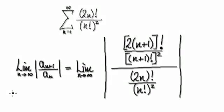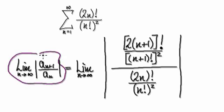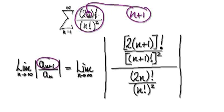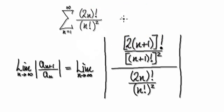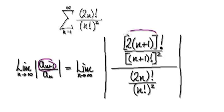To use the ratio test, we need to work out the limit of |a(n+1)/a(n)| as n tends to infinity. We need to get the next term divided by the current term. So the next term is found by putting n+1 into the expression. That gives us a 2 on the outside, then n+1 here, and don't forget we also put n+1 into the factorial part — so that would be (n+1) factorial squared. So our a(n+1) is this whole expression.